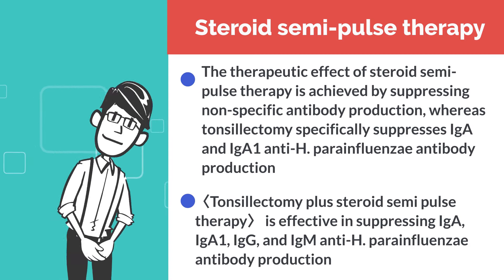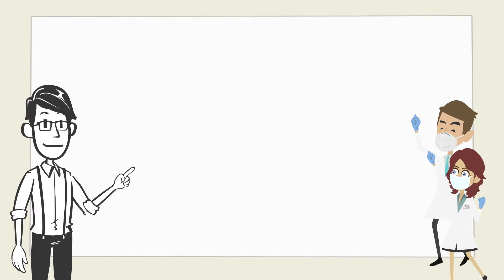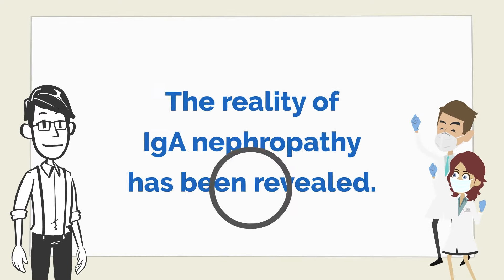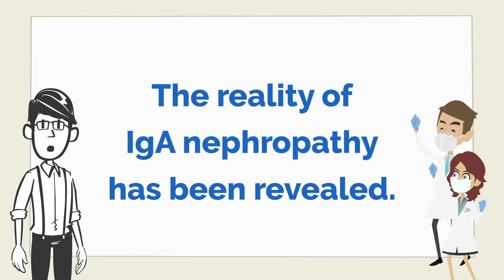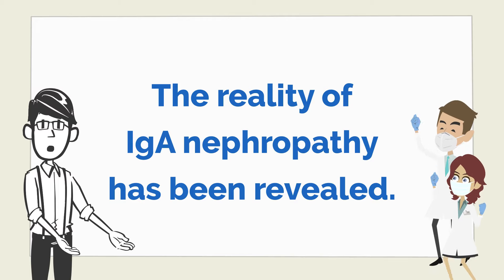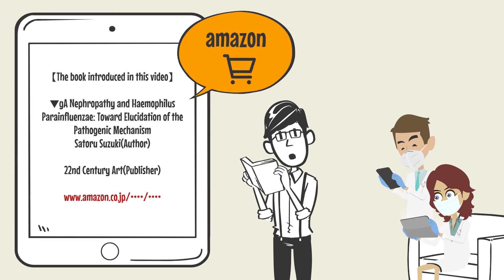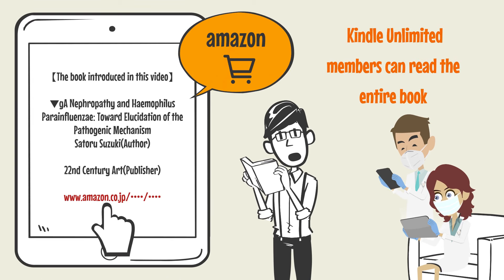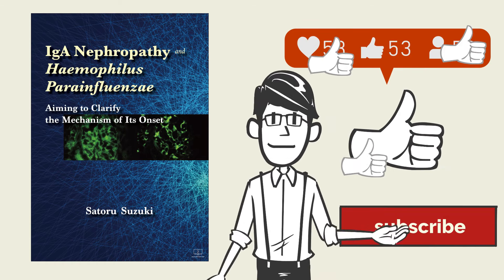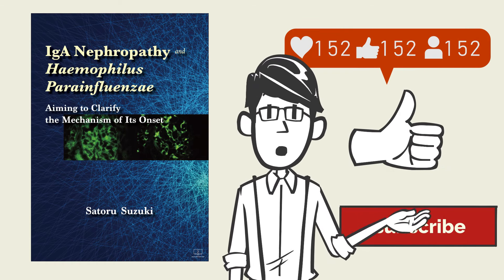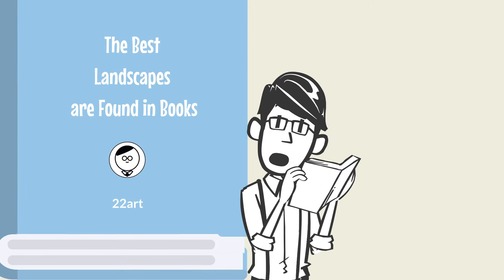Thank you very much, Dr. Suzuki. That's it for this video. If you are suffering from IgA nephropathy, I'm sure you have spent many anxious days due to its many mysteries. But it's rare to find a book that reveals so much about it. Kindle Unlimited members can read the entire book. Please subscribe to my channel and rate the video highly so you don't miss my latest videos. It was Fukuzawa from The Best Landscapes Are Found in Books — thank you for listening.